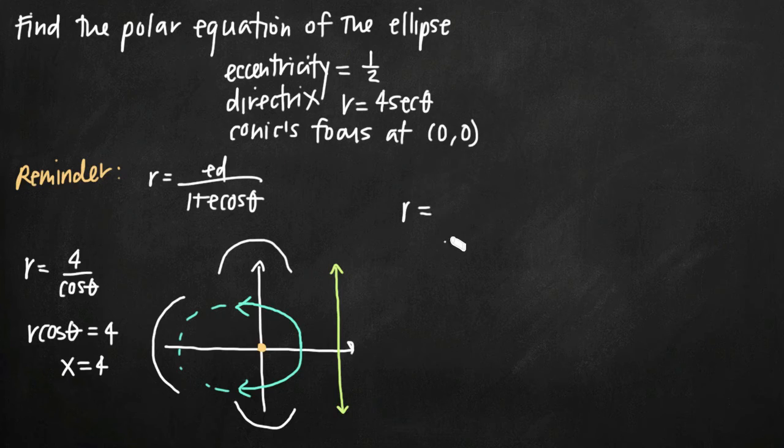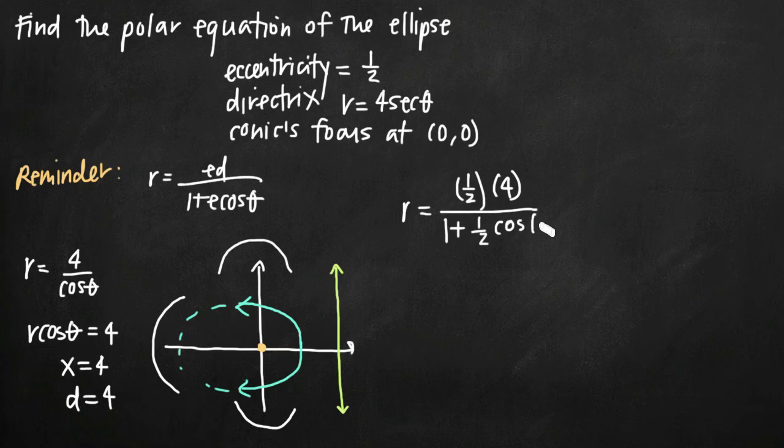We get r = (1/2)(4)/(1 + (1/2)cos(θ)). The eccentricity is 1/2, so we plug in 1/2 for e. We found d = 4 from the directrix equation x = 4.